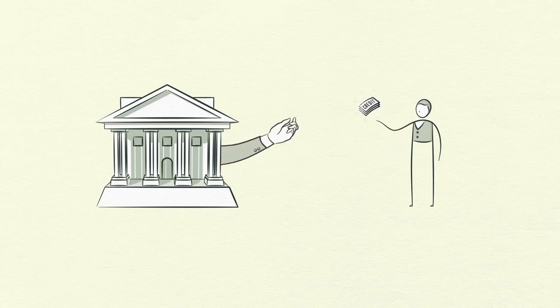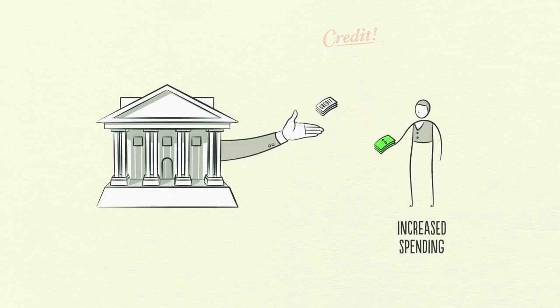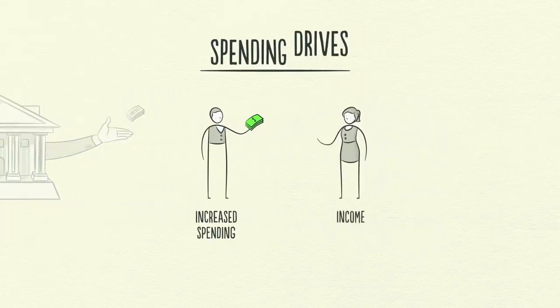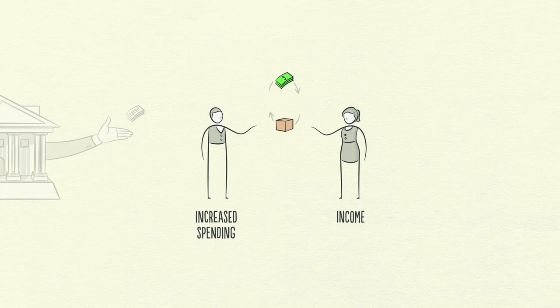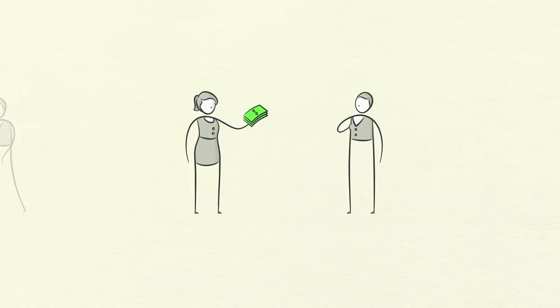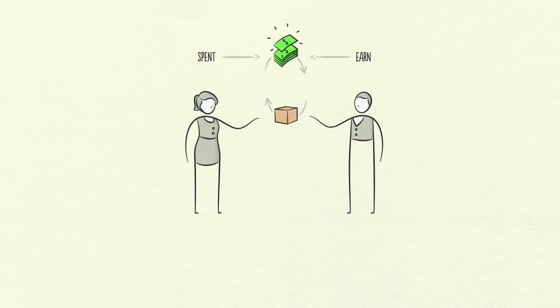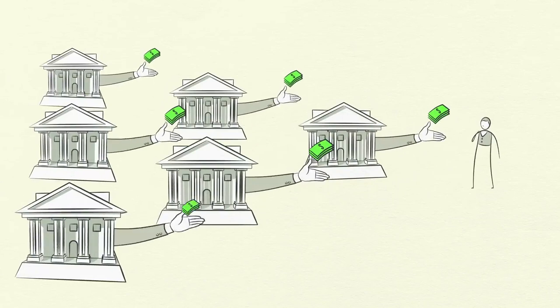So why is credit so important? Because when a borrower receives credit, he is able to increase his spending. And remember, spending drives the economy. This is because one person's spending is another person's income. Think about it. Every dollar you spend, someone else earns. And every dollar you earn, someone else has spent. So when you spend more, someone else earns more.